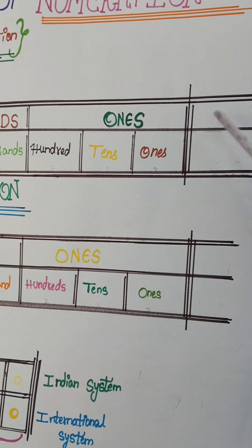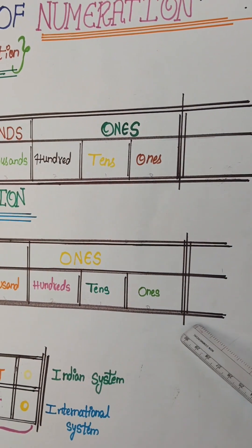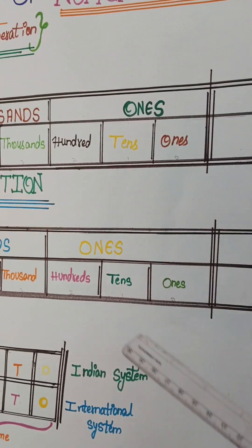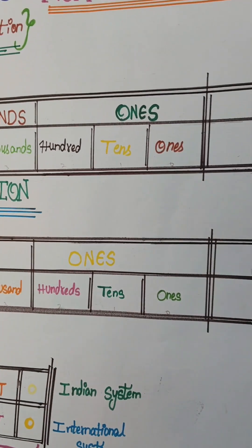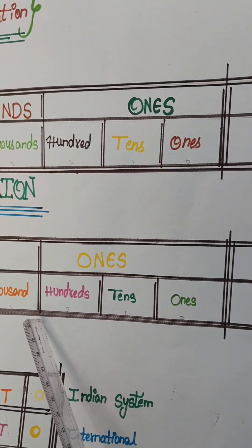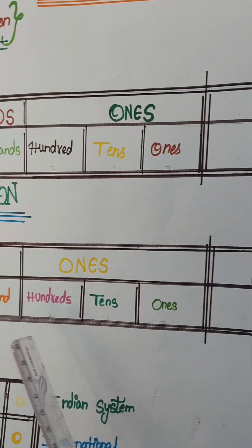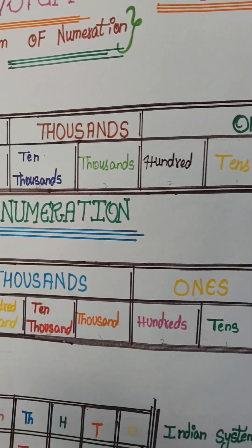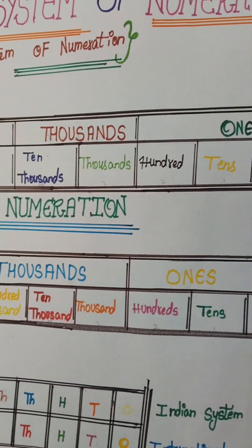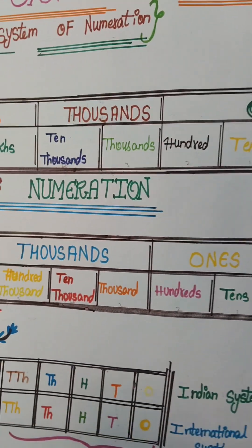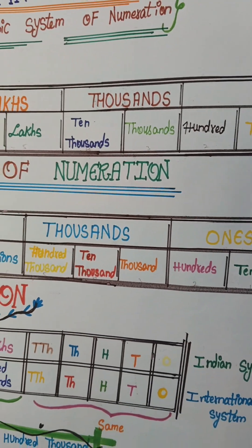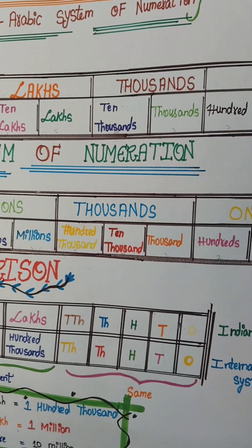In both the Indian system and the international system, the first comma comes after three digits — that is after the hundreds place. In the Indian system, after that, commas come after every two digits. In the international system, commas come after every three digits.